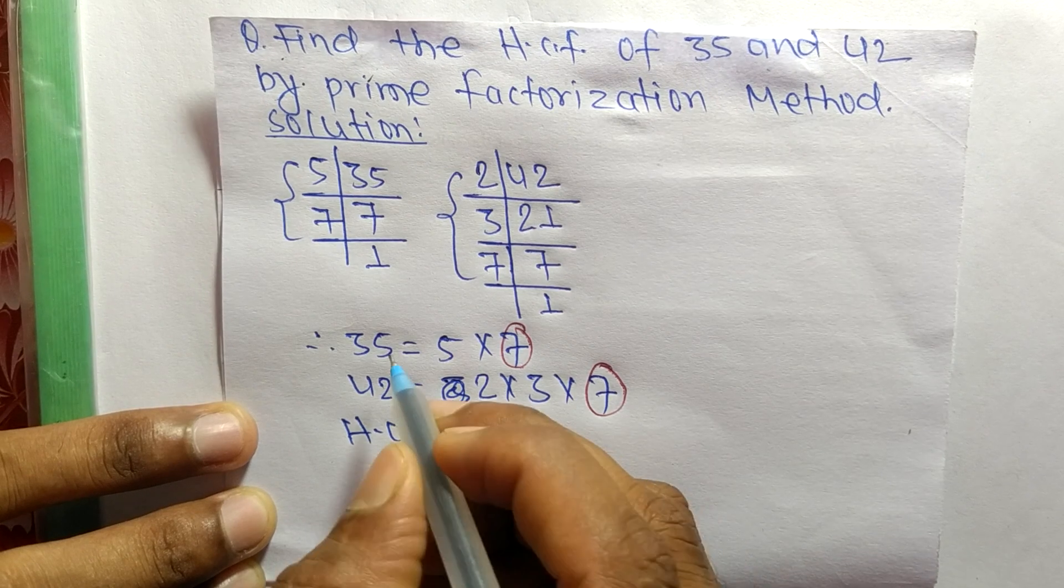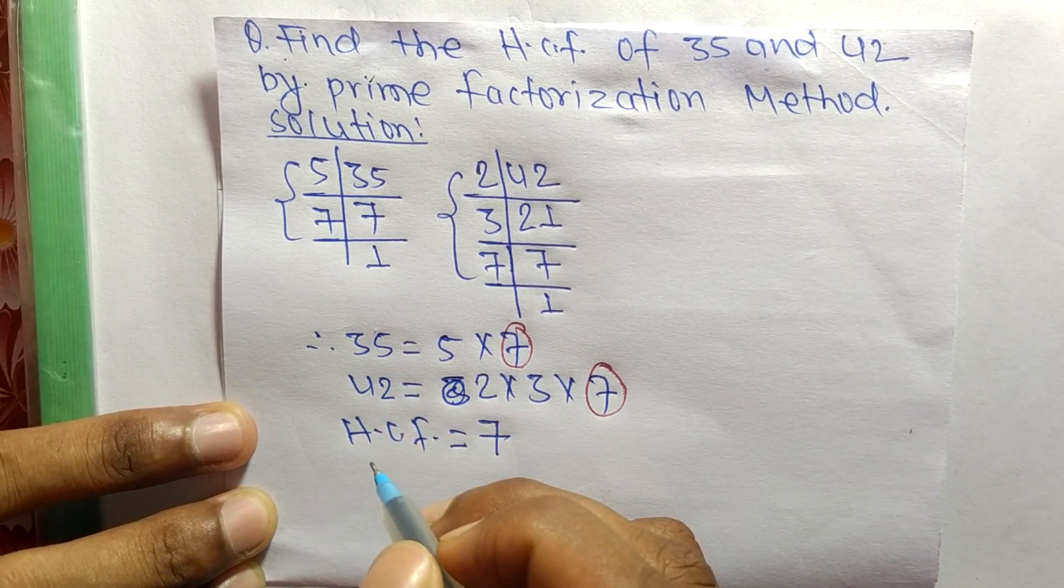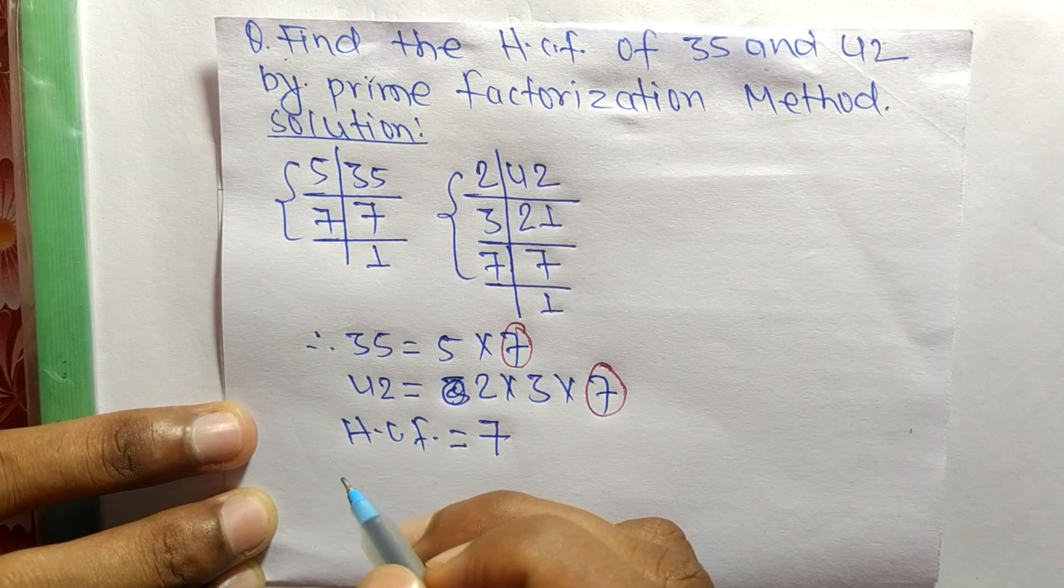7 is the HCF of 35 and 42. So this much for today and thanks for watching.